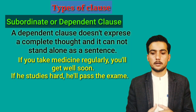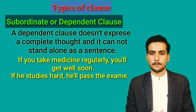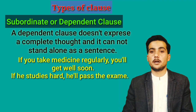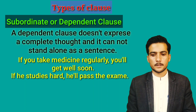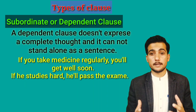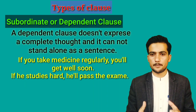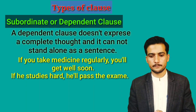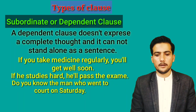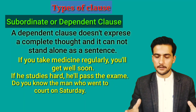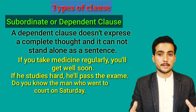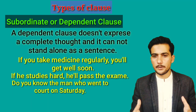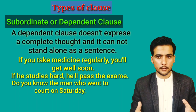'If he studies hard, he will pass the exam' — 'if he studies hard' is the subordinate or dependent clause, and 'he will pass the exam' is the main or independent clause because it can stand alone as a sentence. 'Do you know the man who went to court on such a day?' — 'who went to court on such a day' is the dependent or subordinate clause.